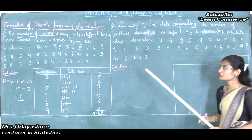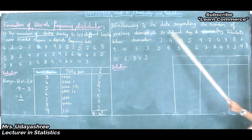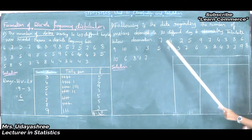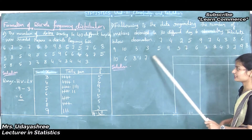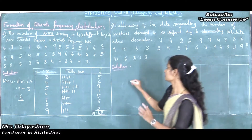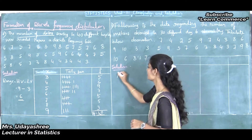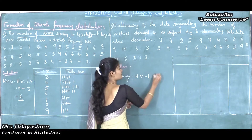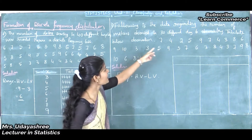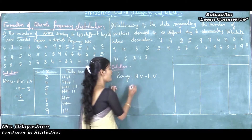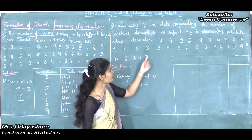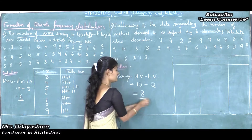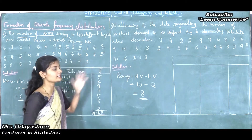Now let's move to the third problem. The problem is: the following is the record of the number of meteors observed in 30 different days at an observatory. Tabulate the below observations. Here observations are given. First, we need to find the range. The range formula is highest value minus lowest value. In this problem, the highest value is 10 and the lowest value is 2. So 10 minus 2 equals 8. Here the range is 8, which is small, so we can go with discrete frequency distribution.